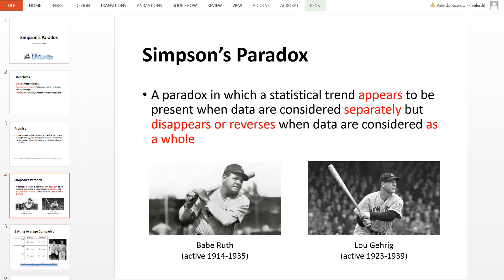Let's look at Simpson's Paradox in the context of Babe Ruth and Lou Gehrig's batting average. Over their career, they overlapped for a few years in the 1920s, and these are some legendary players who won multiple World Series. Simpson's Paradox is a trend that appears to be present when the data are considered separately — in this case, batting averages — but the trend disappears or reverses when the data are considered together.